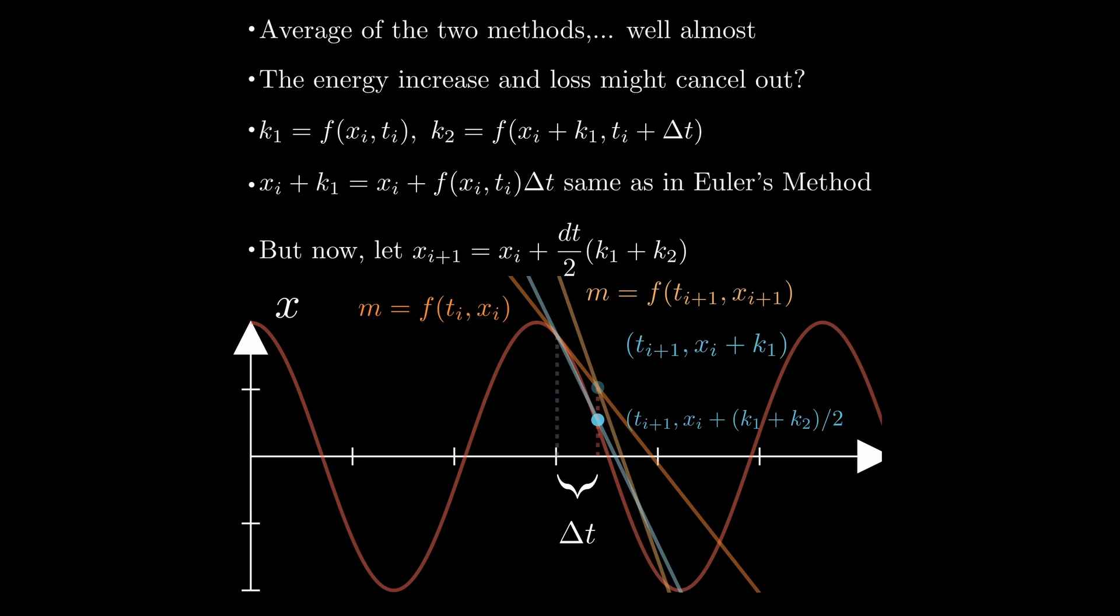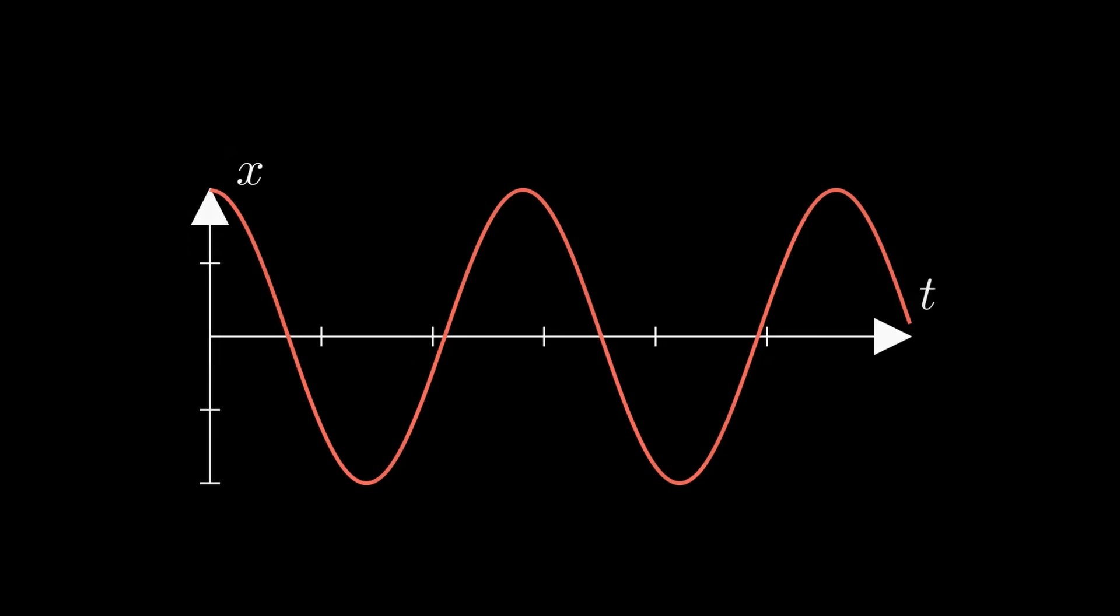This method takes into account points at i and i+1. If all has gone well, this method should be both more numerically stable and have energy conservation better. And would you look at that, it's almost a perfect fit. Well, we can tell this is still an approximation since as time increases we do see that it gets less accurate, but this is definitely the best method we've had so far. Actually, the technique we've just employed does have a specific name: RK2, which stands for Runge-Kutta second order.